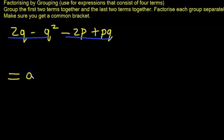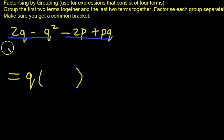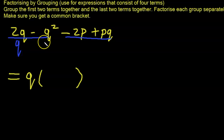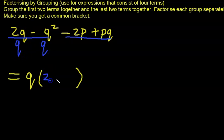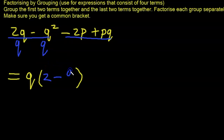We have q in both terms of the first group, so we need to determine what goes inside the bracket. We divide each term by q. So q into 2q leaves 2, and q into q² leaves just q. The first group factors to q(2 minus q).